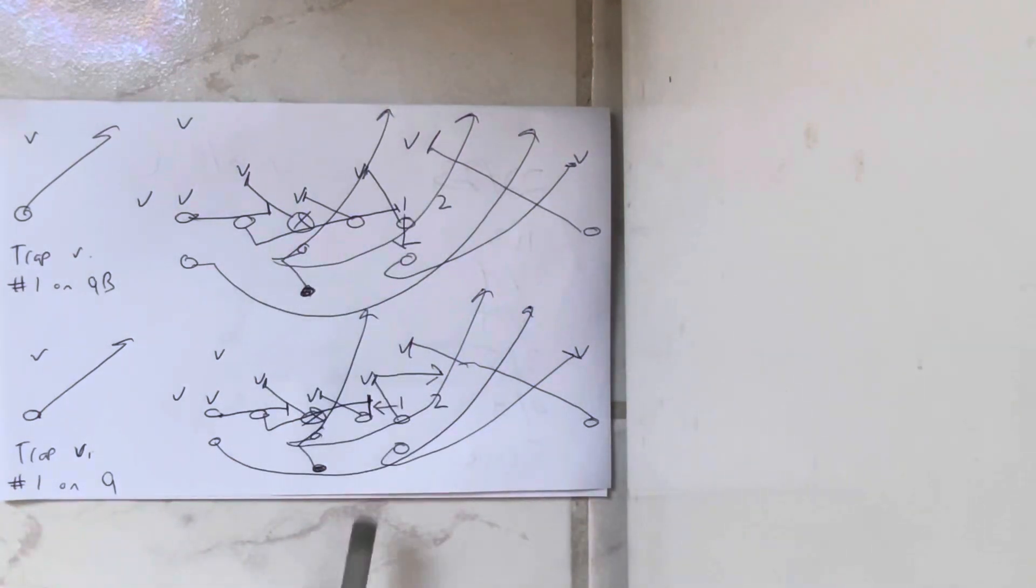Another school learned that if number one is taking the B back and you trap him, it's going to pop because the mic has to run over the top to play the quarterback or the pitch. So trap has become a holistic play.